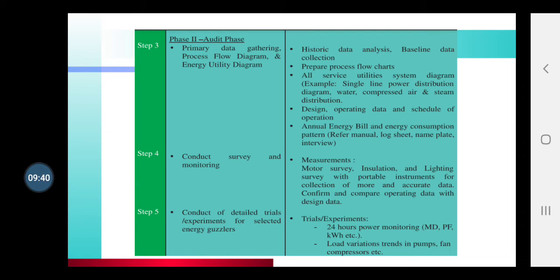Step four: Survey and Monitoring. For a survey — for example, in a company with many machines — you have to survey all motors to check if they are all of the same rating, check insulation quality, check lighting, use all the energy audit instruments to take measurements, and design data for each one: motor 1 having this rating, motor 2 having this rating. Monitoring means you have to keep an eye continuously on how it works, because when you are working on an audit your full attention should be on how much electricity is being used at each point.